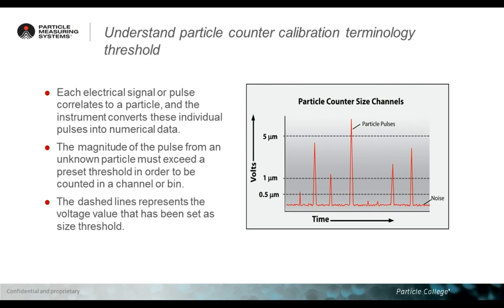In the next slide, I want to show you what happens behind the scenes — something you don't see from your particle counter display. There will be pulses, one per each particle, and each pulse may be different from the others based on the size of the particles. A small particle like 0.5 micron will result in a small peak, while a big particle like 5 micron will result in a higher peak. By using what we call thresholds, represented by dashed lines, our particle counter is able to understand whether the particle that flowed into the optical cell was a 1 micron, 2 micron, or 5 micron particle.